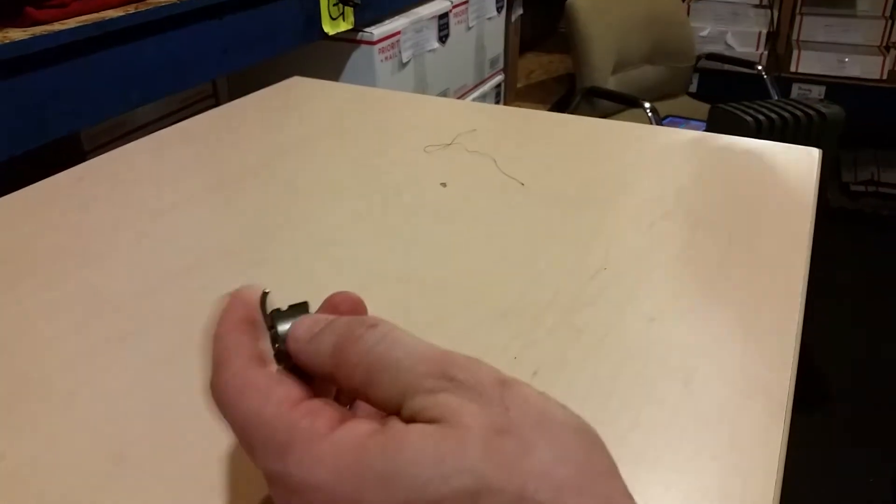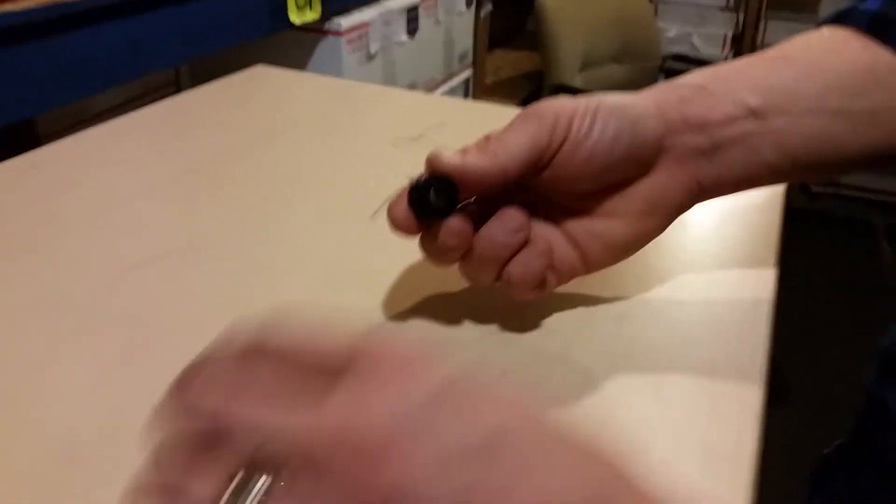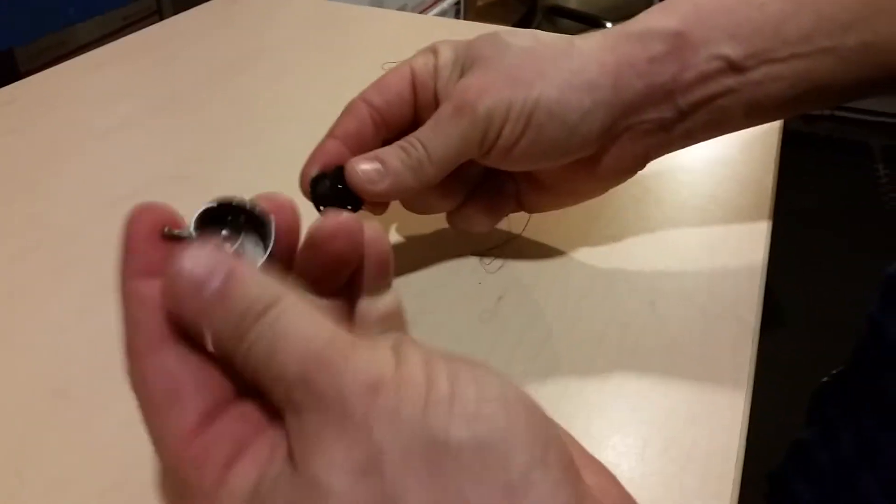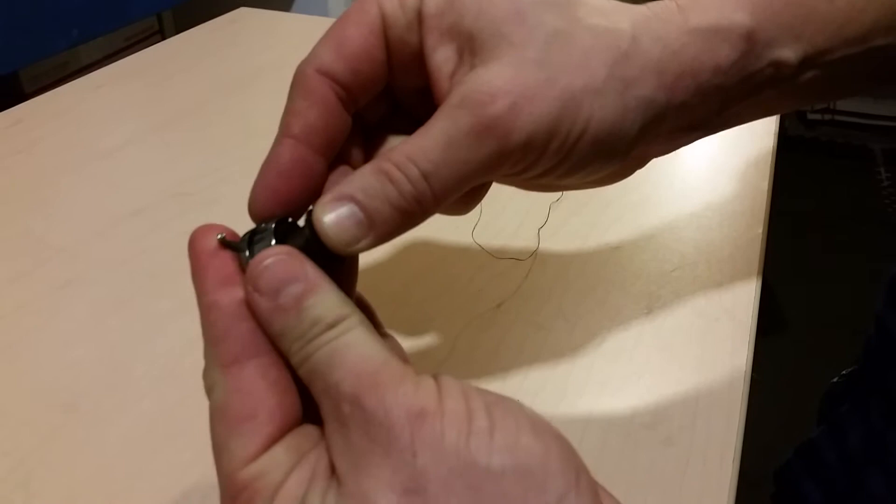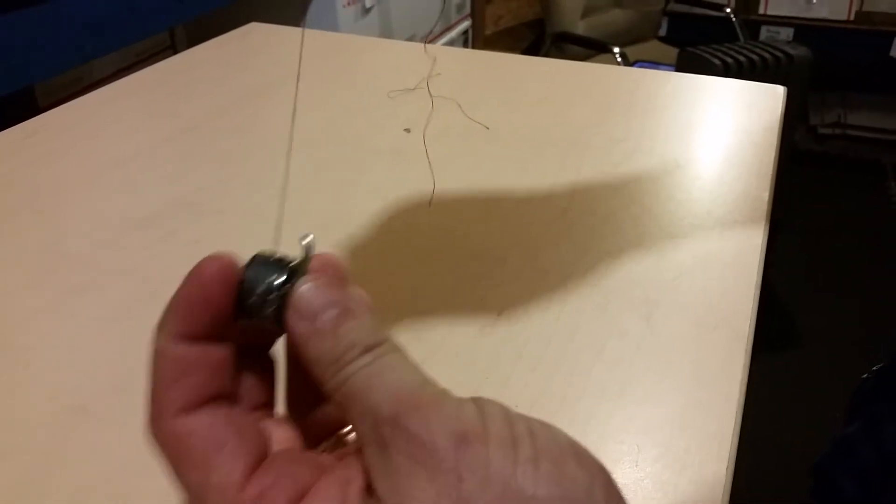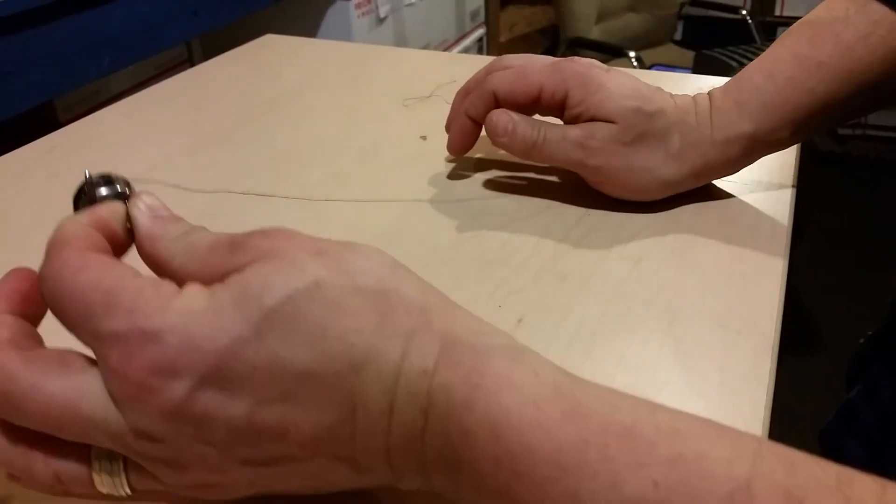One more time. Get my bobbin case. Thread to the right. Turn it around. Pop it in. Find the groove. Pull it through. It's ready to go into the machine. Pop it on.